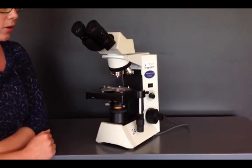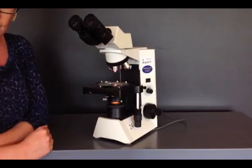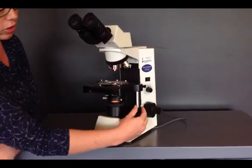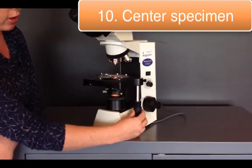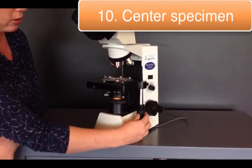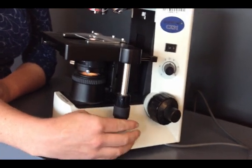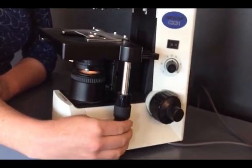Once you have your slide on, then you need to use the stage control to adjust the slide position so that the light is shining directly through your specimen. Center it as much as possible.